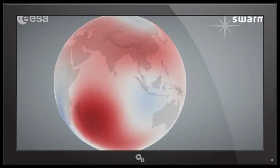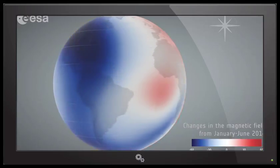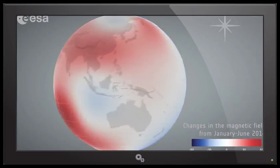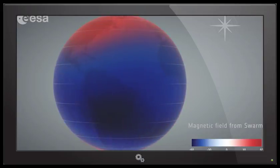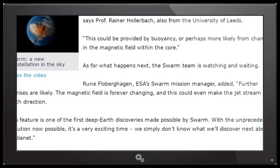Of course you need a force to move the fluid towards the boundary, says Professor Rainer. Holler back, man. Yeah, holler back. He's also from Leeds. This could be provided by buoyancy, or perhaps more likely from changes in the magnetic field within the core. As for what happens next, the Swarm team is watching, and waiting, and pontificating, and renumerating, and flagellating. We all flagellate, man.